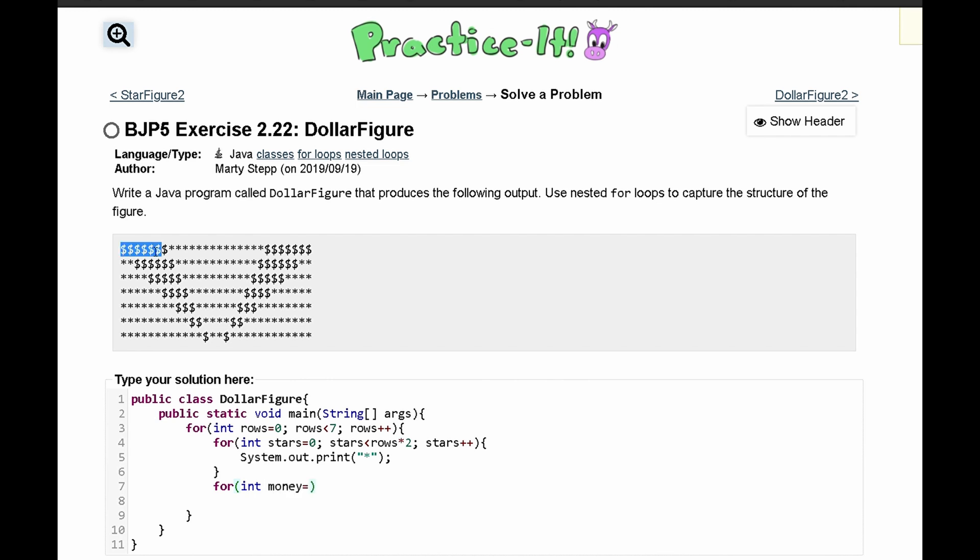We'll do int money, it's initially seven, and it's going to run as long as money is greater than rows because every single time we lose one money spot, and we'll do money plus plus.